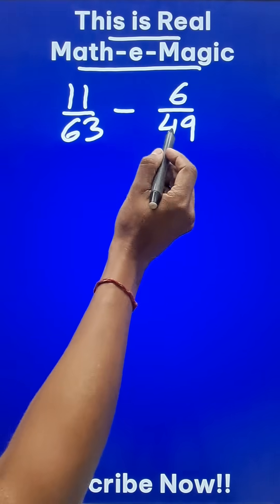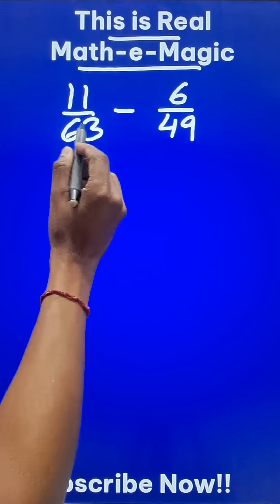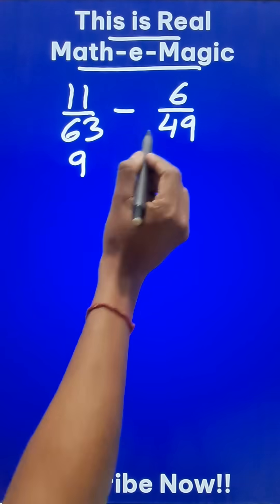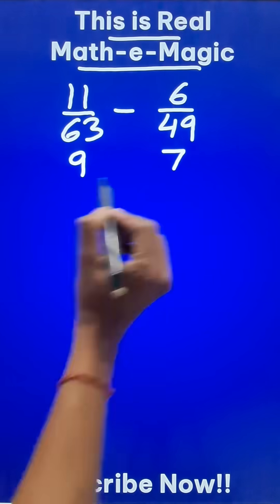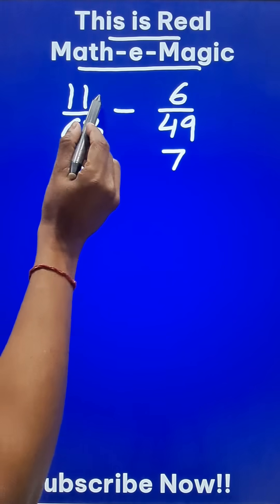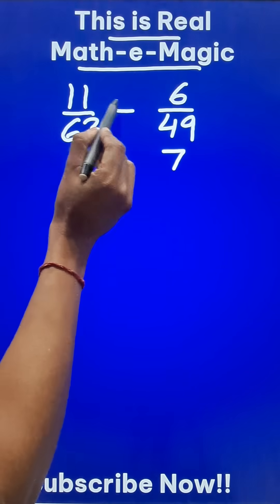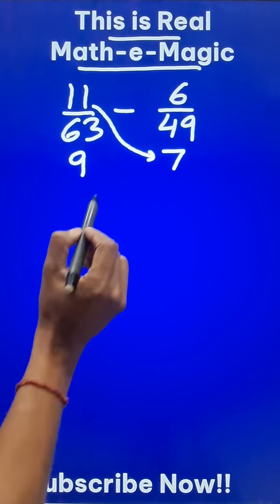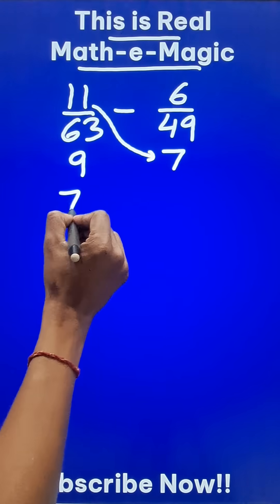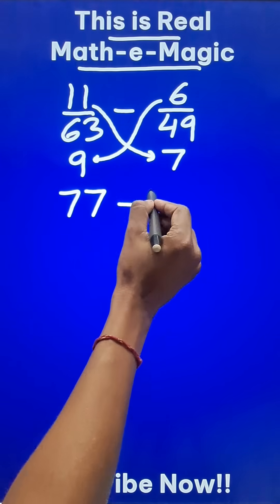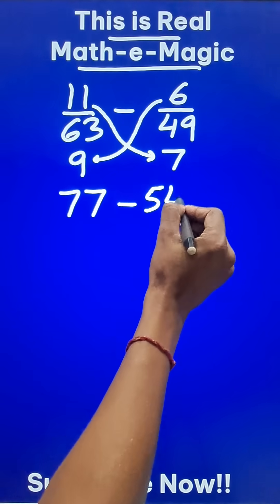63 and 49 both go into 7. So 7 times 9 is 63, and 7 times 7 is 49. Now, instead of multiplying by 49, we multiply 11 by 7, which gives us 77, and 6 by 9, which gives us 54.